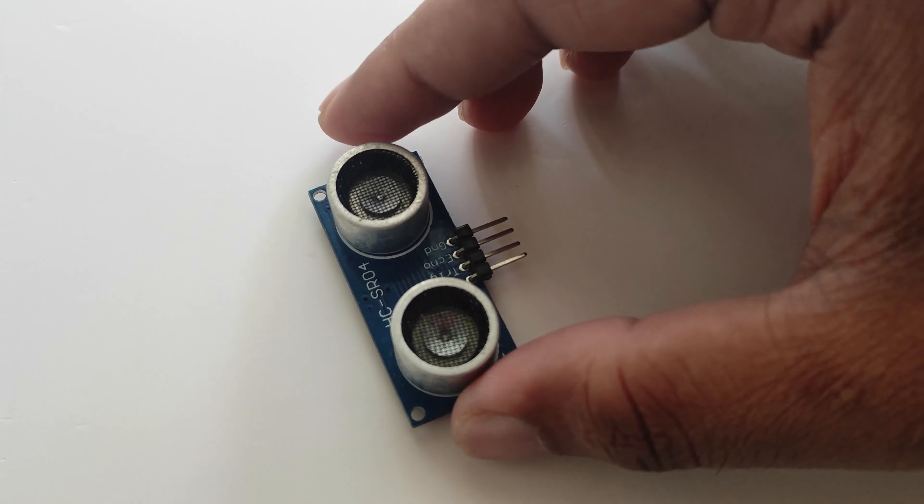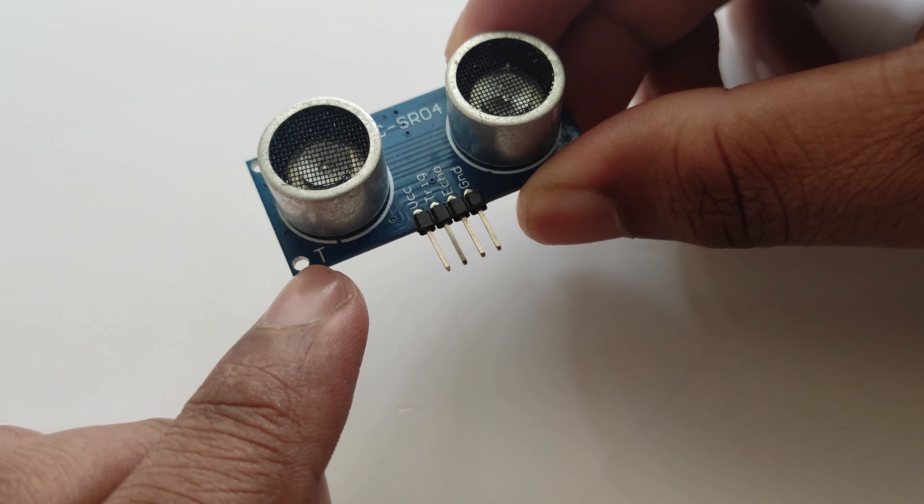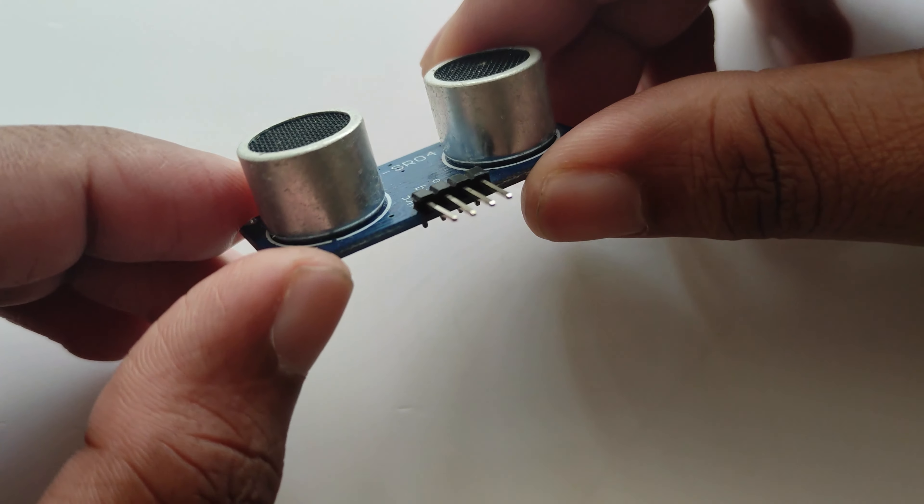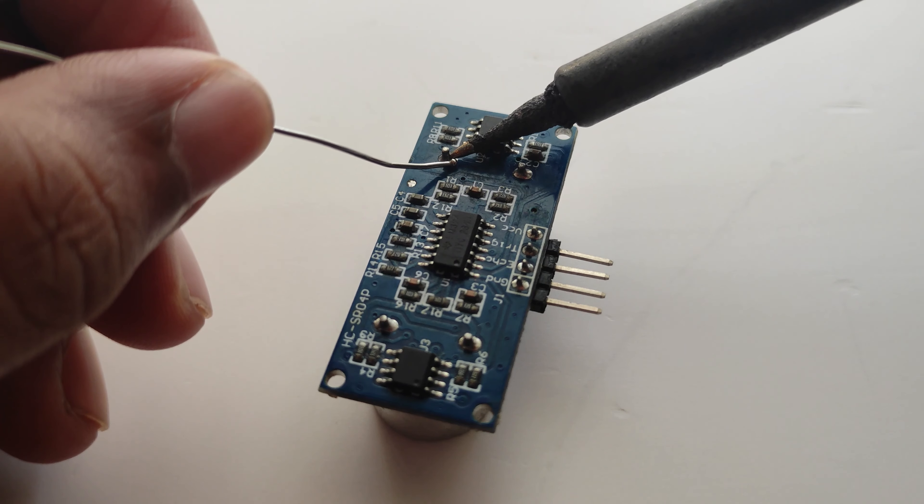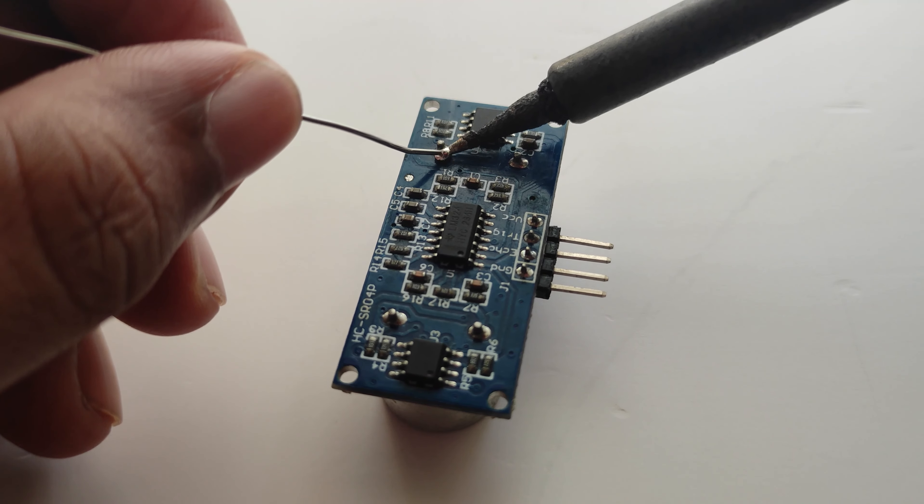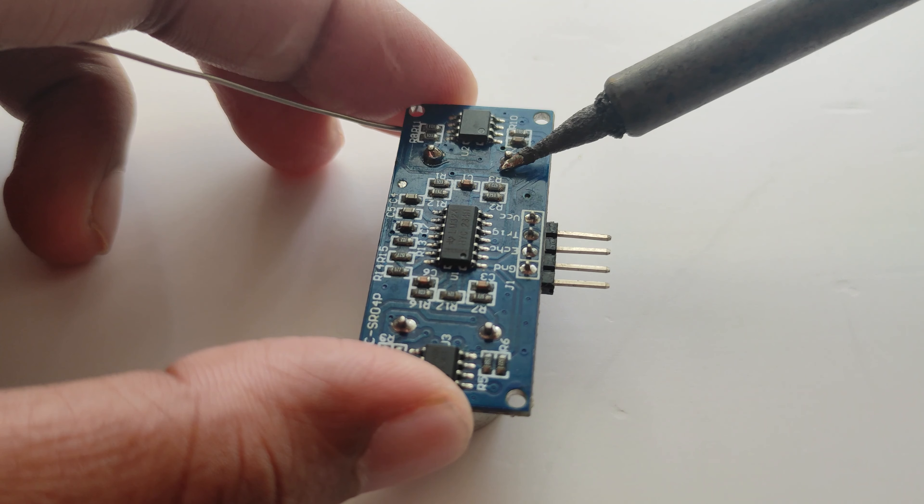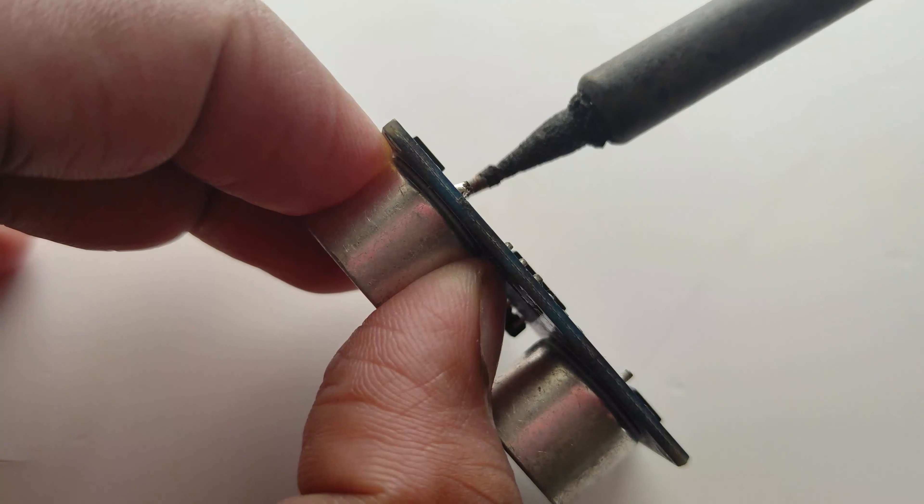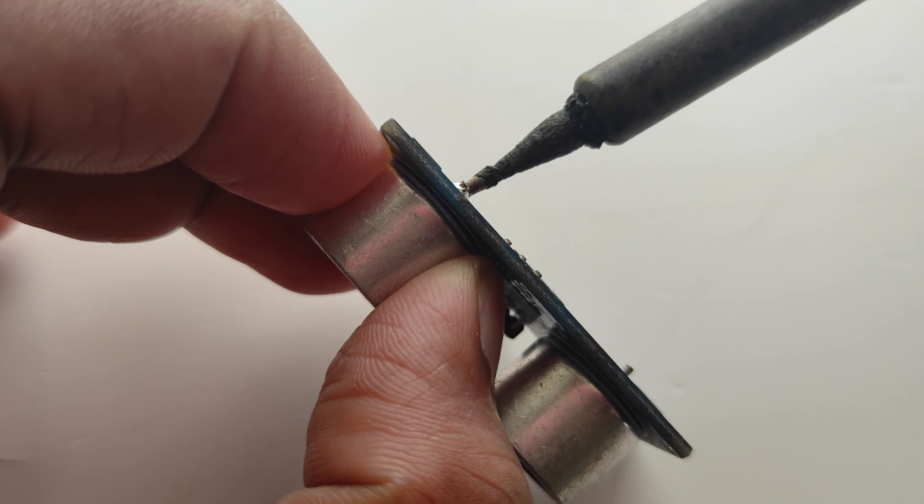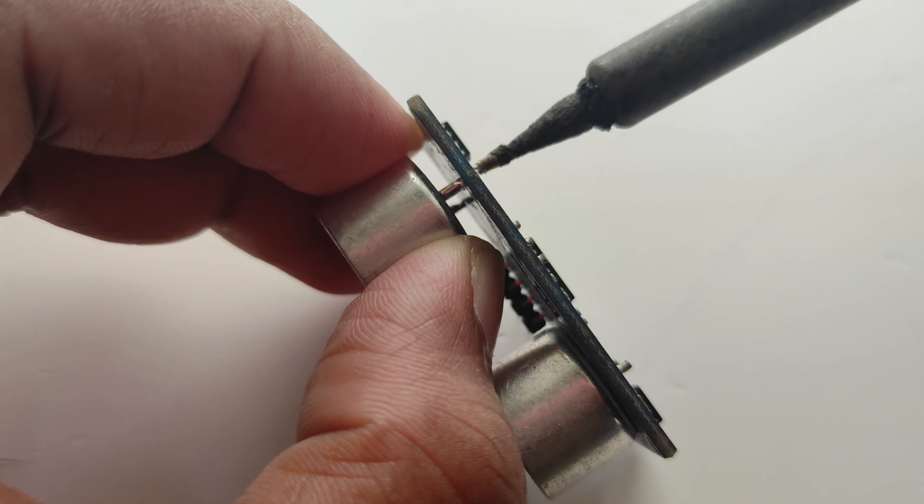For making the project, take out the ultrasonic module. Note that the module has a transducer and a receiver. Apply a tab or solder to the legs of the ultrasonic module to remove it from the PCB. Then gently apply pressure from the bottom side of the module to remove it from the PCB.